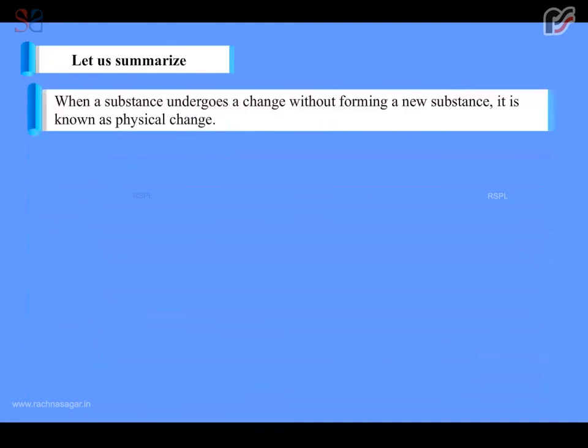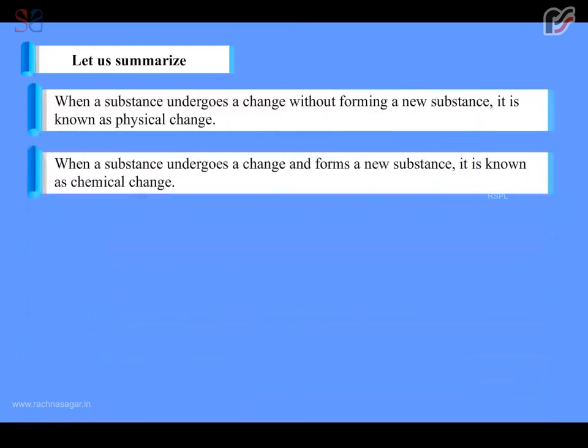Let us summarize. Without forming a new substance, it is known as physical change. When a substance undergoes a change and forms a new substance, it is known as chemical change.